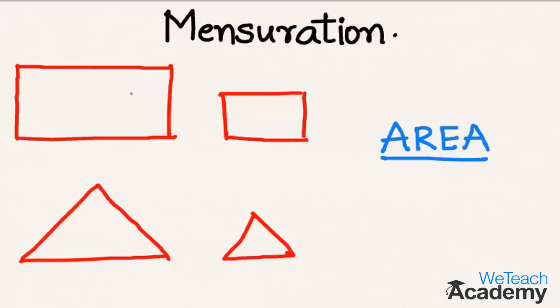By observing both the rectangles, we can see that the rectangle on the left hand side is bigger. We can see this by just observing the amount of space inside the boundary, which is more when compared to the space inside the boundary of the figure on the right hand side.